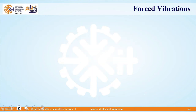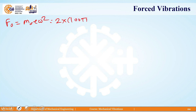We calculate the magnitude of the force F₀ as m₀ × E × omega². This equals 2 × (100π)² × 0.04. The magnitude of the force comes out to 7900 Newton.